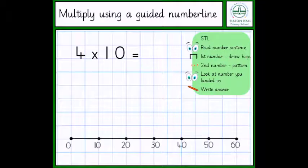Next, the children can move on to using a guided number line to help them solve their multiplication. Here we start by reading the number sentence. 4 times by 10 equals.